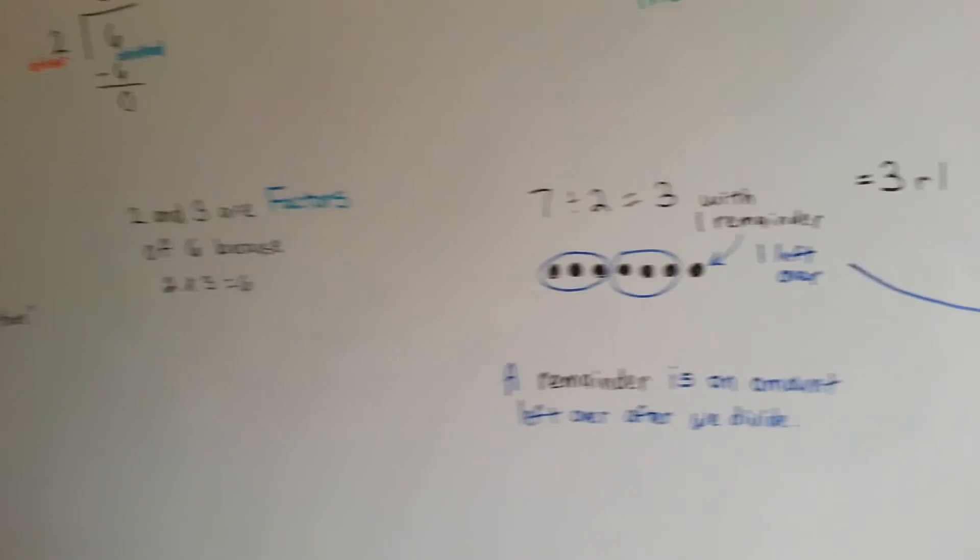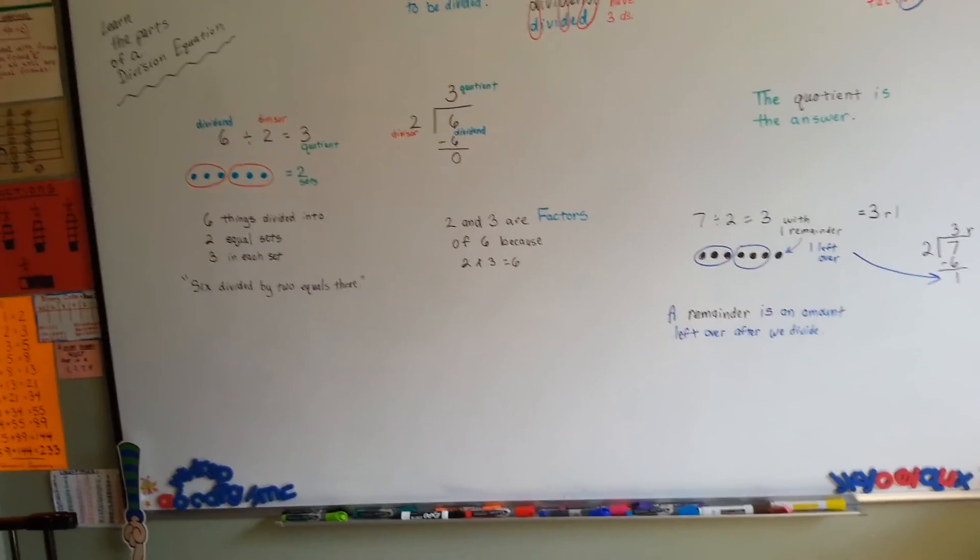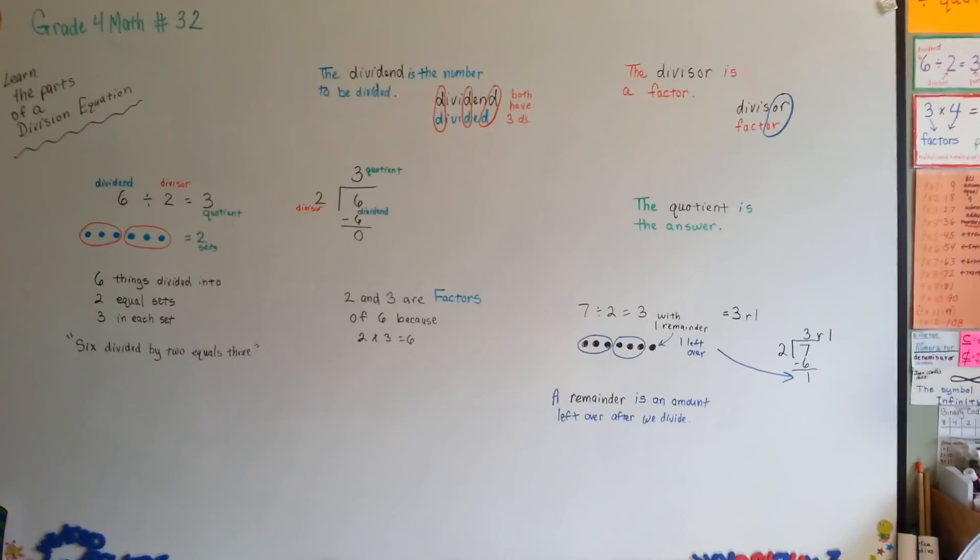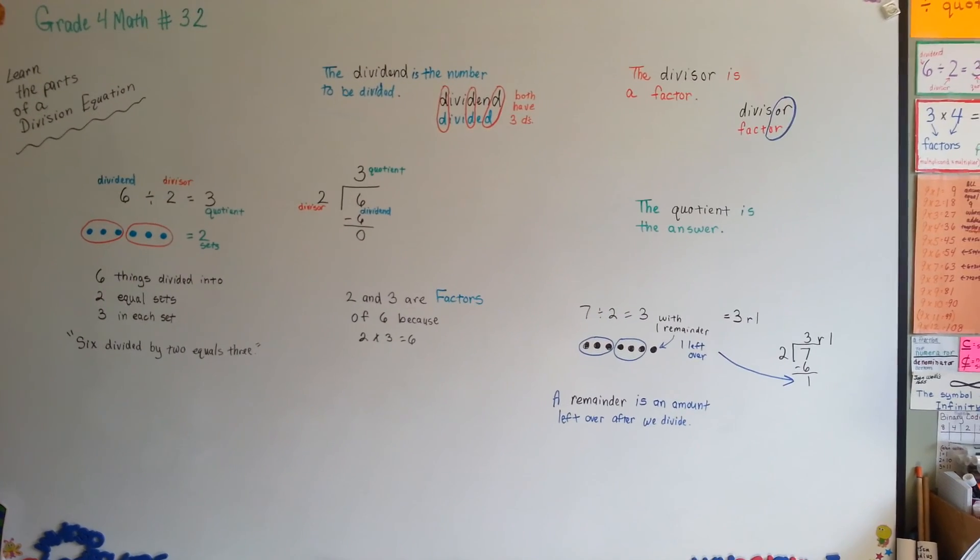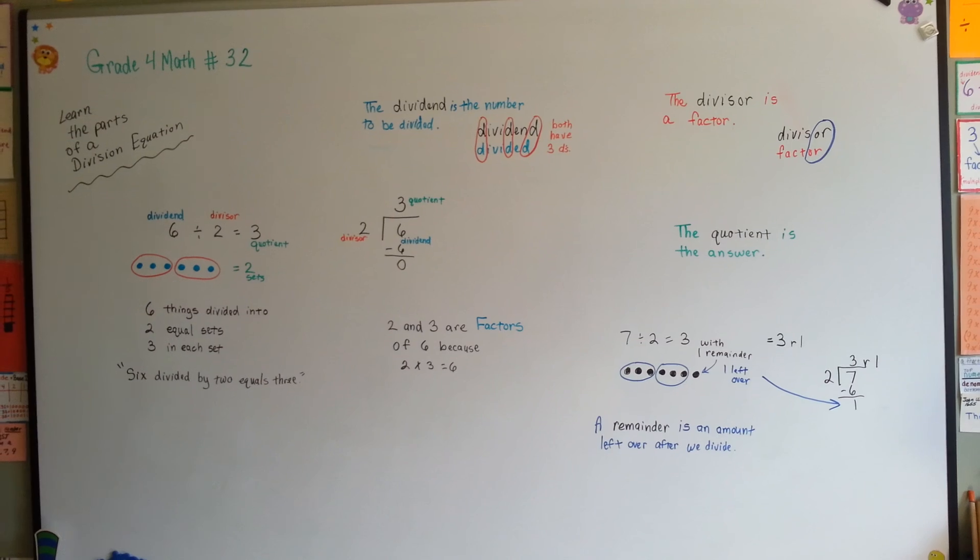Those are the parts of a division problem. We've got dividends, divisors, quotients, and remainders. Try to learn each one. Try to remember that a dividend has three D's, and a divisor has an OR ending just like factor. And I'll see you the next video, because we're going to start dividing. Bye!